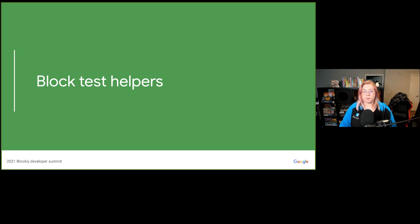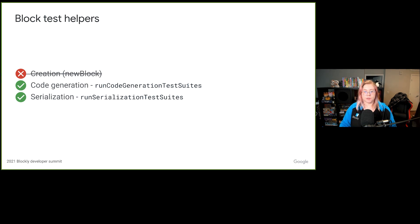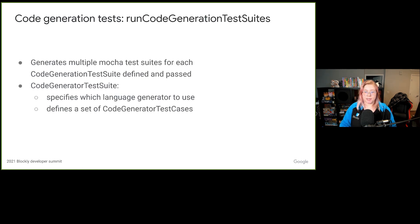Now let's talk about what's available for block test helpers. The test helpers in DevTools provide helper functions for generating code generation and serialization tests. Creation tests are typically straightforward, so there aren't any helpers available for that. The helper provided for running code generation tests is RunCodeGenerationTestSuites. It generates multiple Mocha test suites for each code generation test suite defined and passed into the function. The code generation test suite specifies which language generator to test and a set of code generator test cases. The Mocha test generated for each test case will create a block based on the createBlock function defined on the test case and compare the generated code to the expected code and inner order.